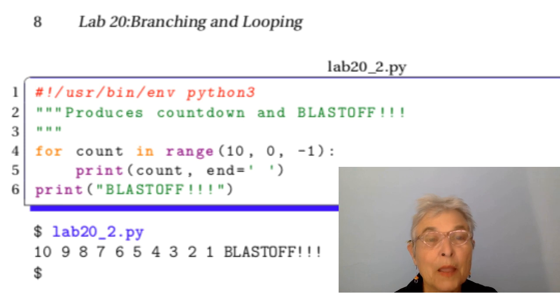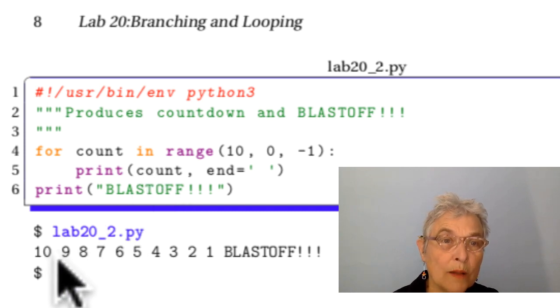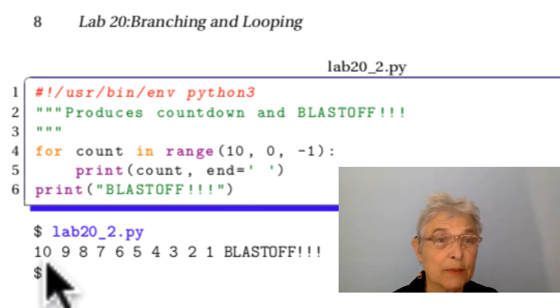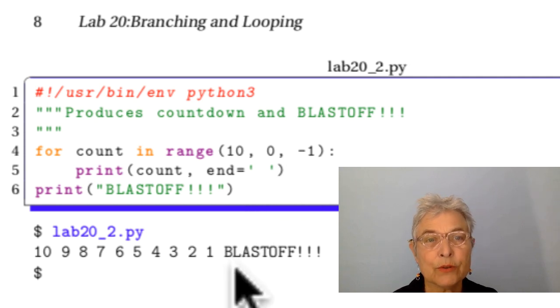You might have found this Blast Off program to be a little bit more challenging. You had to start at 10 and go down to 1, going backwards with the minus 1. And then you print that count. And because we didn't want it to print out one number per line, we had to add end equals just a space. Then we have those spaces. When we're all done, we print Blast Off. And that's how we produced that.